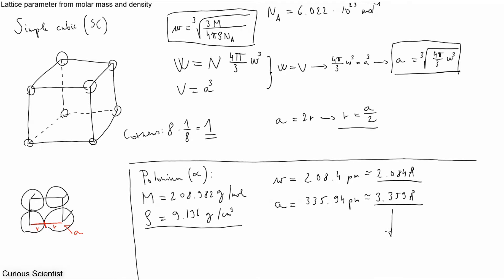And basically you just divide it by 2. And you get the R which is 167.97 picometers, or 1.6797 angstroms.